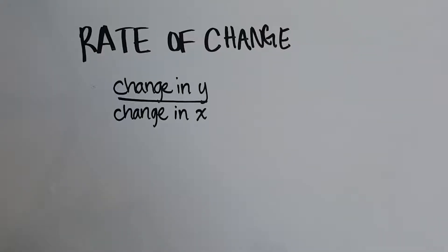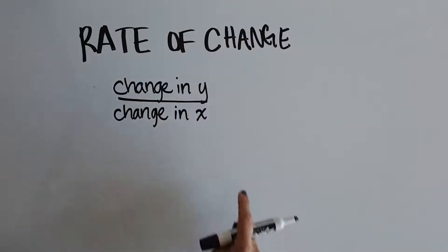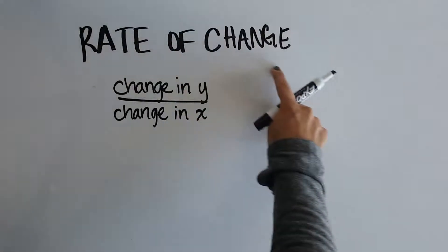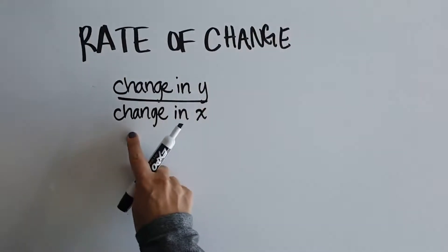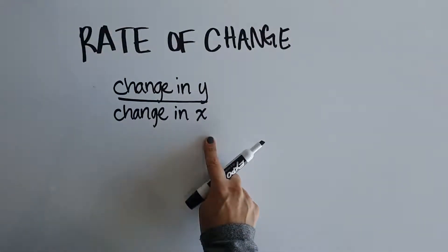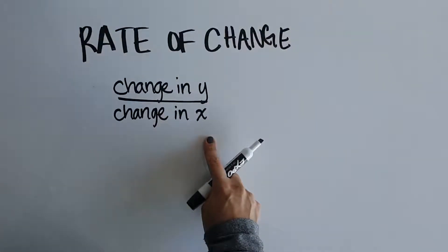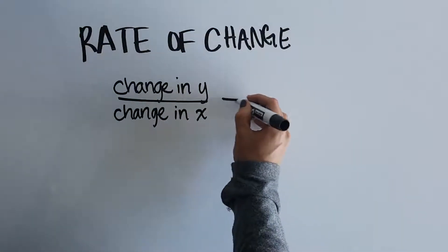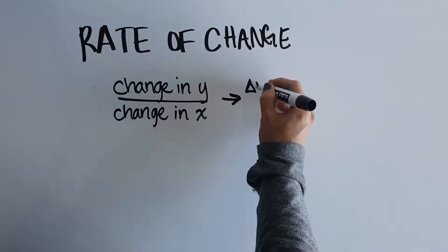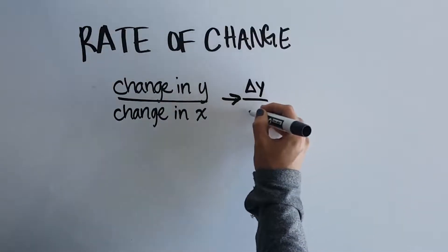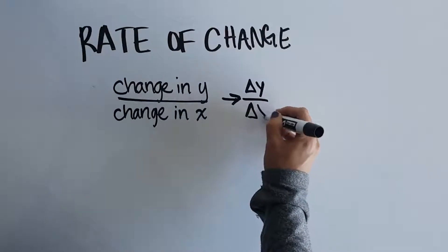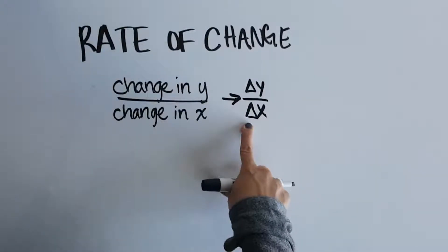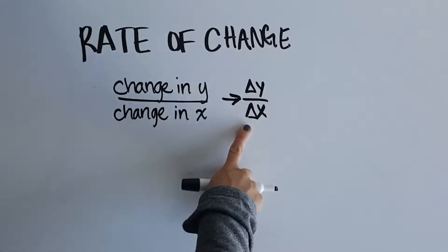In this video, we are going to talk about how you find rate of change. The definition of rate of change is the change in y divided by the change in x. In math, you'll see that described as delta y over delta x. This just means 'change in' — it's a Greek symbol.